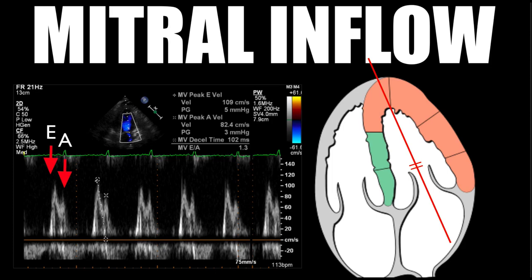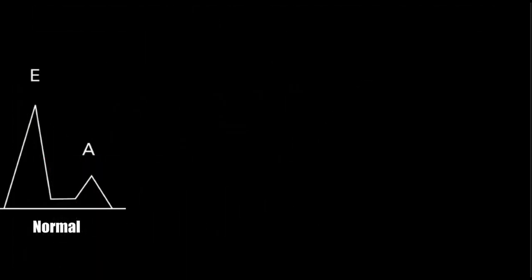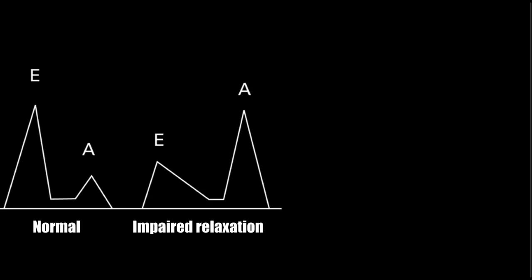You'll notice there are two peaks: an E wave and an A wave. E stands for early filling, and A stands for the atrial kick. In normal diastolic function, the E wave is going to be greater than the A wave — that's a person with normal filling pressures and no diastolic dysfunction. As we start to see diastolic dysfunction, the E wave becomes less than the A wave, because there's more restriction to blood flow into the left ventricle. The ventricle is less compliant and the atria has to kick more to fill it.